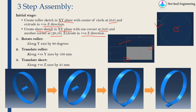After creating instances in assembly, follow three simple steps. First, rotate the roller along the Y axis by 90 degrees. Then translate the roller along the positive Y axis by 108 mm, so it sits on top of the sheet. Finally, translate the sheet along the positive Z axis by 25 mm. The assembly is now correctly configured with the sheet positioned to move into the roller.